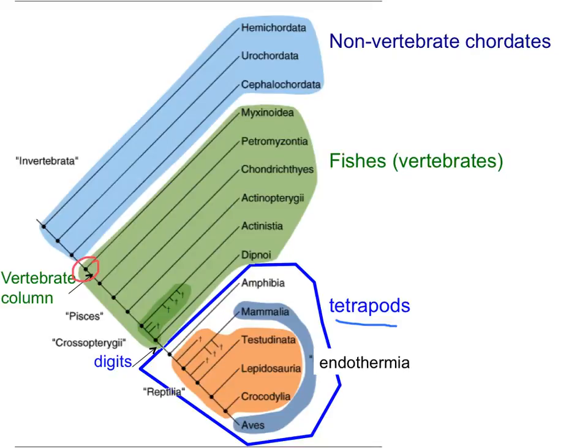This is all in relation to context. These traits are not always a symplesiomorphy. But when we compare tetrapods to everybody else, having a vertebral column is a symplesiomorphy because other groups, such as fish, also have a vertebral column despite not being tetrapods.